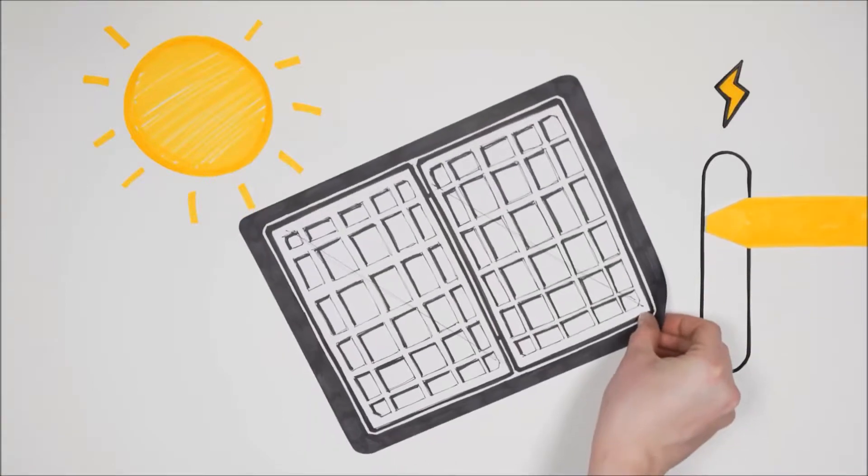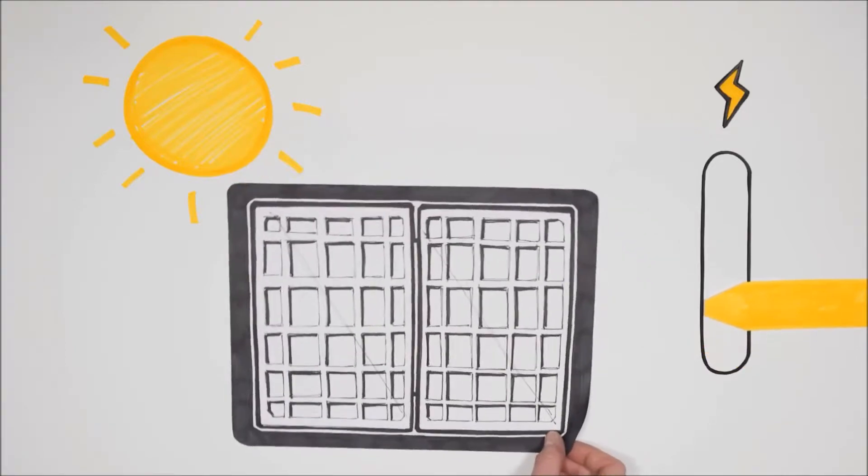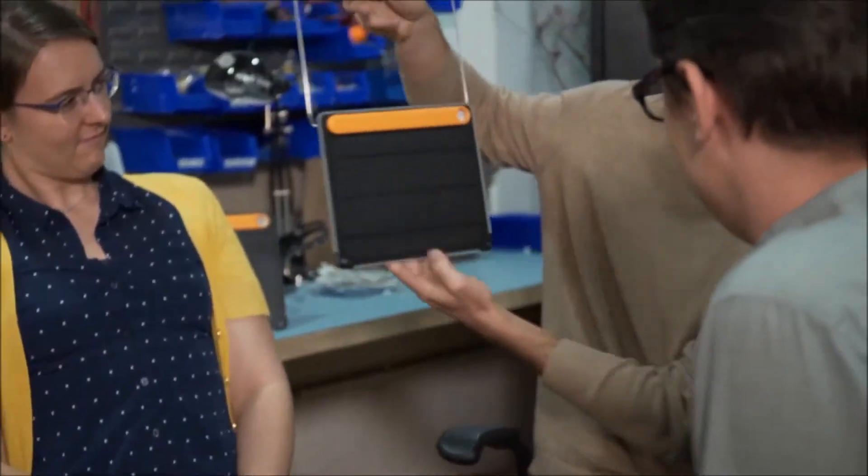If your solar panel is misaligned to the sun by even a little bit, and who hasn't had that problem, you can be missing out on substantial power. So our design needed to align the panel and keep it stable once you're in the right spot.